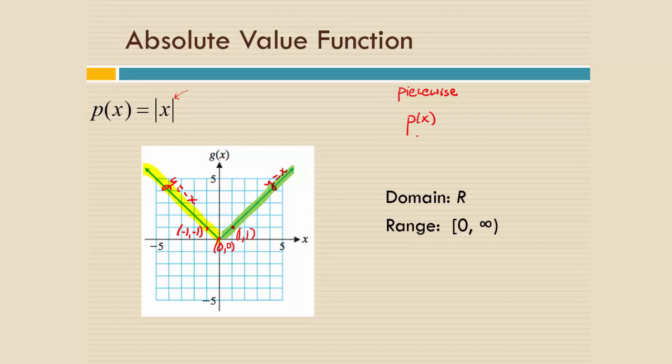p of x, or remember that just means y, is equal to x in some circumstances, and it's equal to negative x in other circumstances. So what you do is you make a little bracket, and you say, okay, p of x is equal to x when what? y equals x happened in green over here, right?